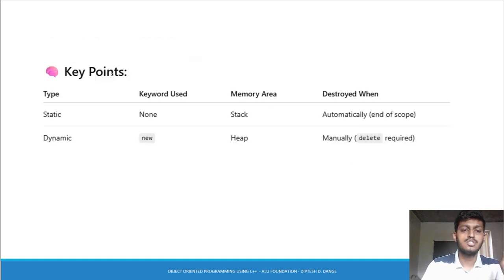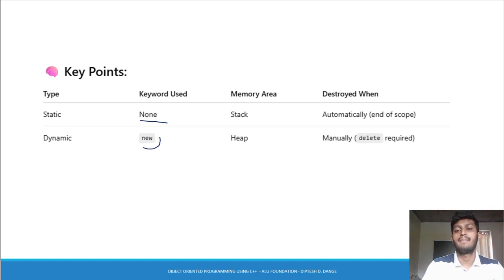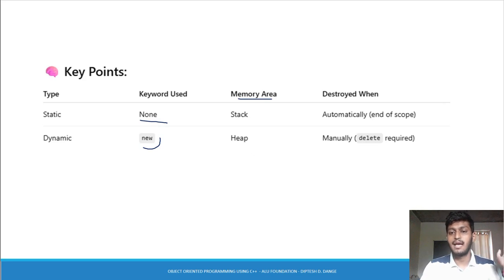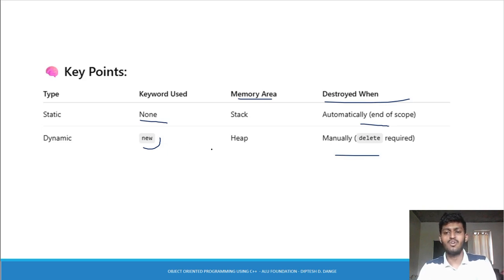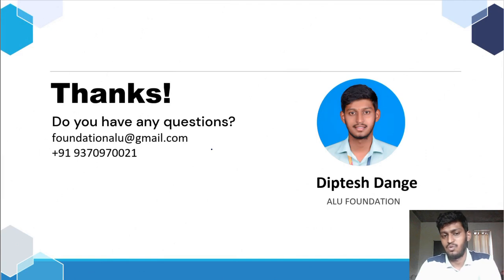Key points देखो — static और dynamic 2 types हैं. Static में keyword कोई use नहीं है, dynamic में new keyword use करना पड़ेगा. Memory area — static में stack, dynamic में heap. Destroy कब होगा — static में automatic, जब उसका scope खत्म होगा. Dynamic में आपको manually delete करना पड़ेगा — delete keyword is required. So new and delete memory management operators हैं.